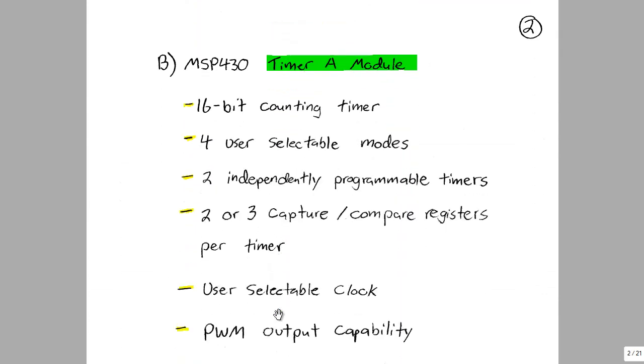The next module in the MSP430 we're going to talk about is the Timer A module. This is a 16-bit counting timer, which means that it starts out at zero and counts up each clock cycle until it reaches a maximum value of 0xFFFF in hex, which is equal to about 64,000.